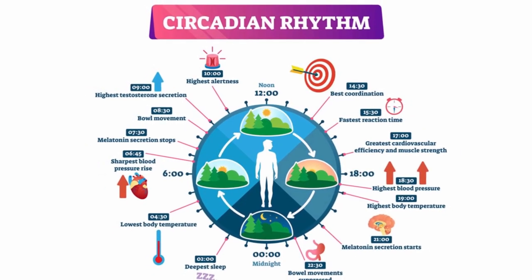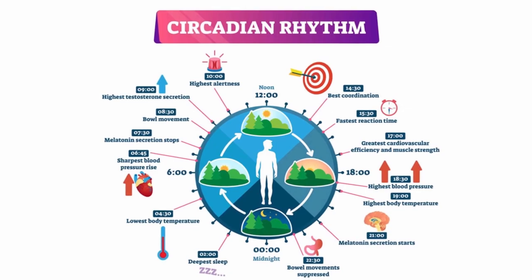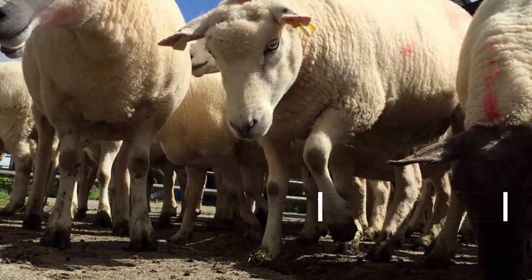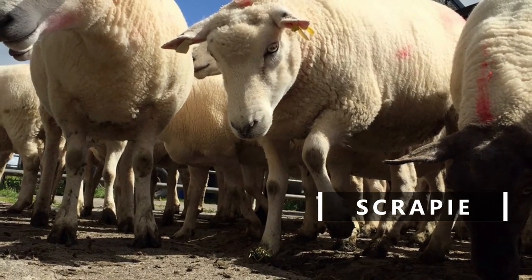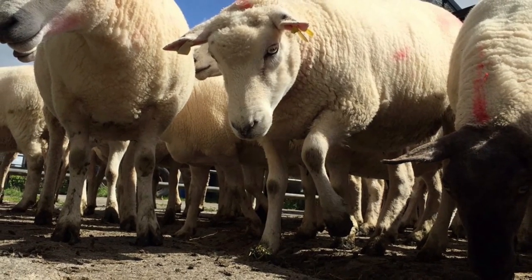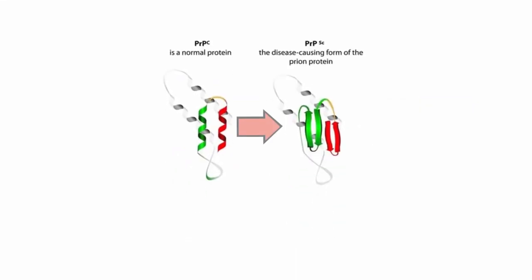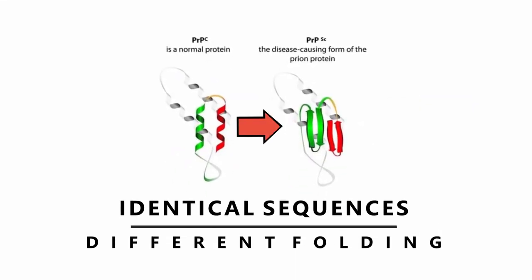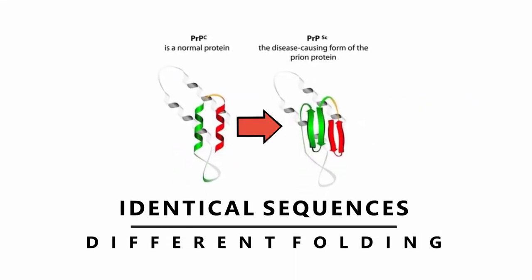The prion protein exists in multiple forms, one of which is the misfolded scrapey form. This is named after scrapie, a prion disease in sheep. Prion protein scrapie has the same amino acid sequence as the normal healthy protein. However, the way it is folded is completely different, being more compact. This difference makes the scrapie form extremely resistant to digestion by enzymes that would normally digest proteins in the life cycle of a cell.